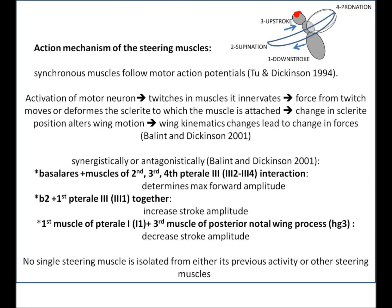The steering muscles are also called the non-fibrillar or end muscles, and unlike the asynchronous power muscles, these synchronous muscles follow motor action potentials. A motor neuron innervates a particular muscle, and when that motor neuron is activated it causes the muscle it innervates to twitch. The force from the twitch moves or deforms the sclerite — a piece of hard cuticle — to which the muscle is attached. The change in sclerite position then alters the wing motion, causing changes in kinematics and in the forces generated by each wing.